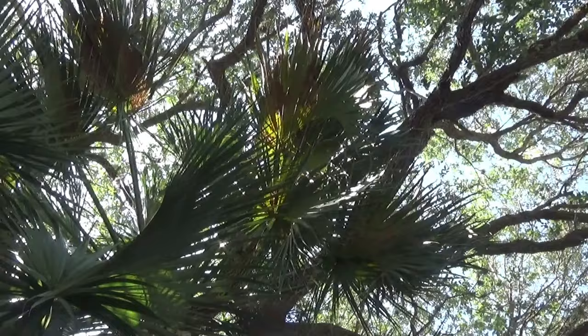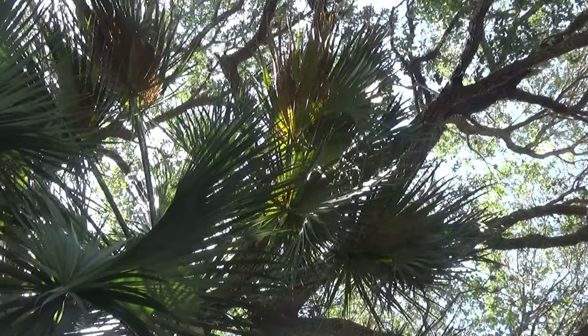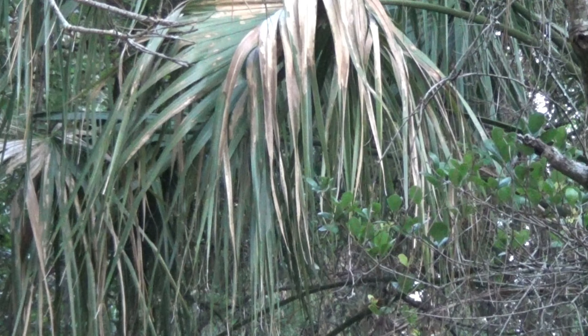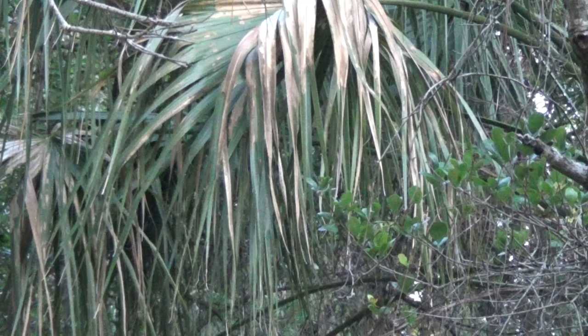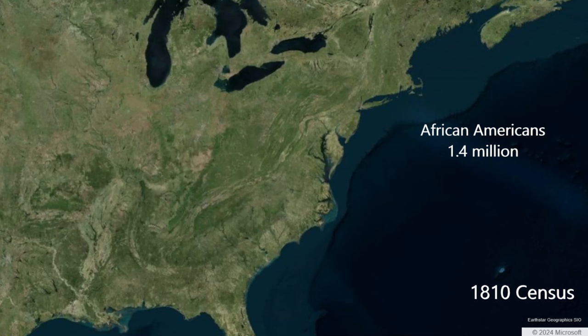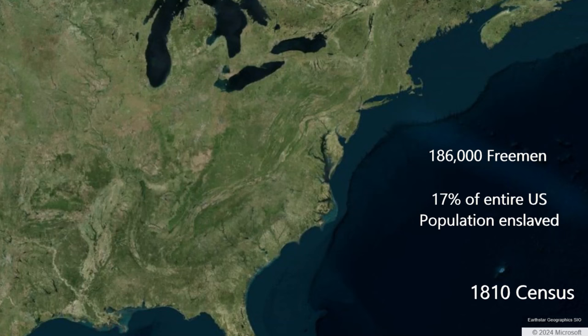In addition to total populations, the census was mandated to tabulate slave populations because slaves, in the original wording of the Constitution, were counted as three-fifths of a person in the enumeration of state representation. At this time, there are some 1.4 million African Americans in the country, with about 1.2 million enslaved. The vast majority of African Americans in the United States in 1810 were slaves, but some 186,000 were freemen. About 17% of the entire United States population was enslaved in 1810.